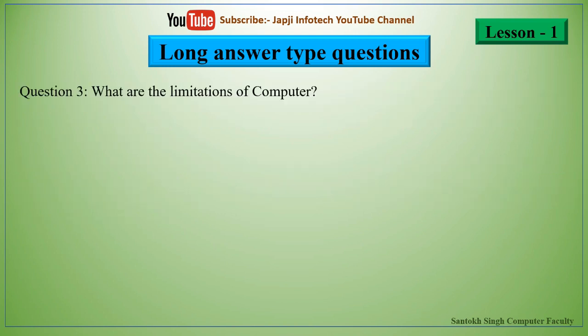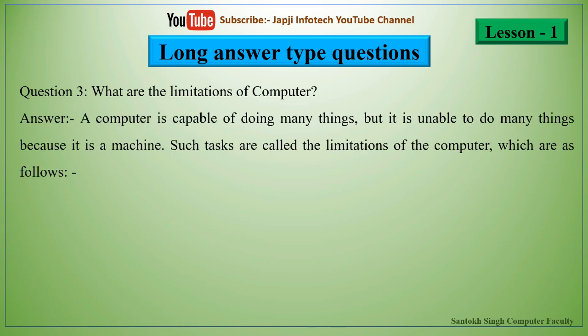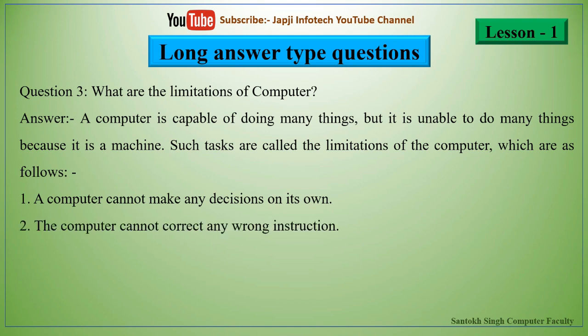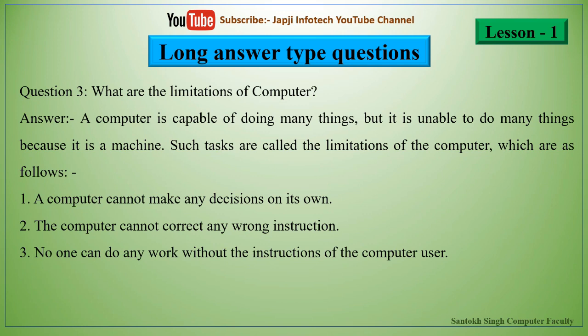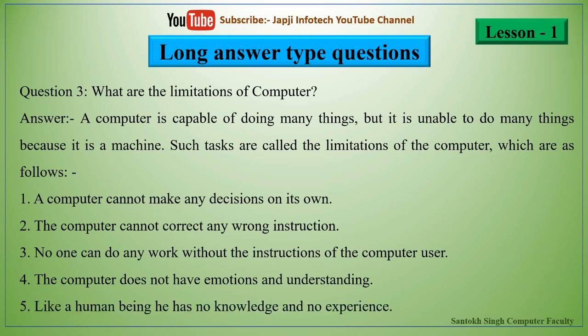The third question is: what are the limitations of computer? A computer is capable of doing many things but is unable to do many things because it is a machine. The first limitation is that a computer cannot make any decision on its own. Second, the computer cannot correct any wrong instruction. Third, no work can be done without the instruction of the computer user. Fourth, the computer does not have emotions and understanding. Fifth, unlike a human being, it has no knowledge and no experience.